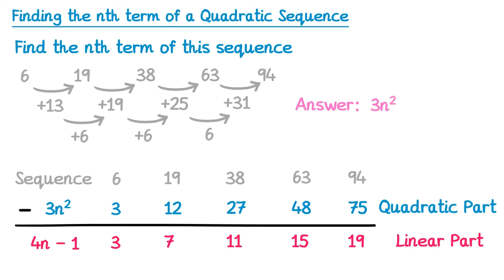There's a quadratic part here given by 3n squared, and there's a linear part here given by 4n minus 1. But if we added the blue bits and the red bits together, we get to our sequence. So all we need to do is take this 4n minus 1 and add it to our answer. So the nth term is 3n squared plus 4n minus 1.